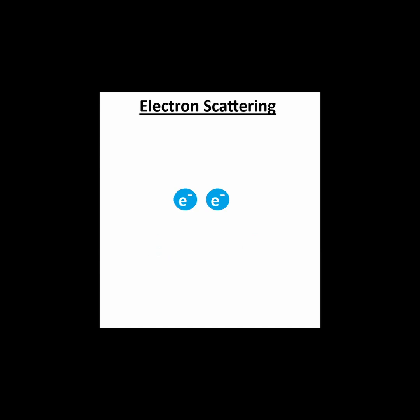Consider two electrons that approach each other and are scattered away. What actually happens between the two particles to make them recoil from each other?